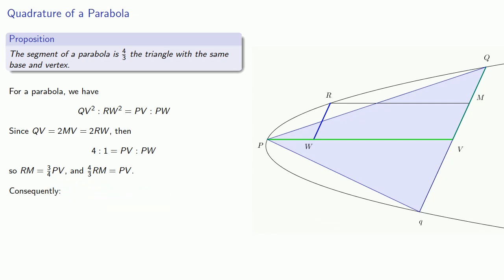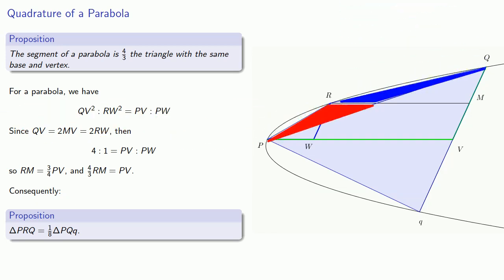Consequently, this triangle PRQ is 1/8 of the triangle PQQ. You should prove that. Here's a hint. These two triangles have the same base and the same height. So all you need to do is figure out what the height of one of them is and what the base is.